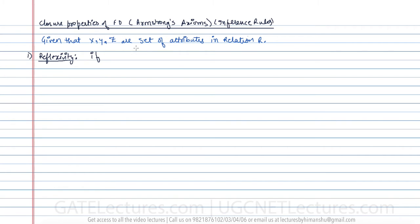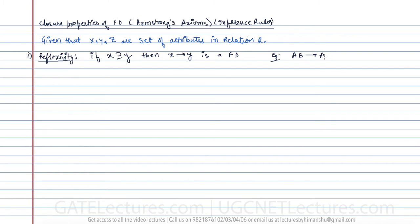Reflexivity states: if X is a superset of Y, or Y is a subset of X, then X determines Y is a functional dependency. For example, AB determines A is a trivial functional dependency. Here Y is a subset of X, which is why this functional dependency always holds.